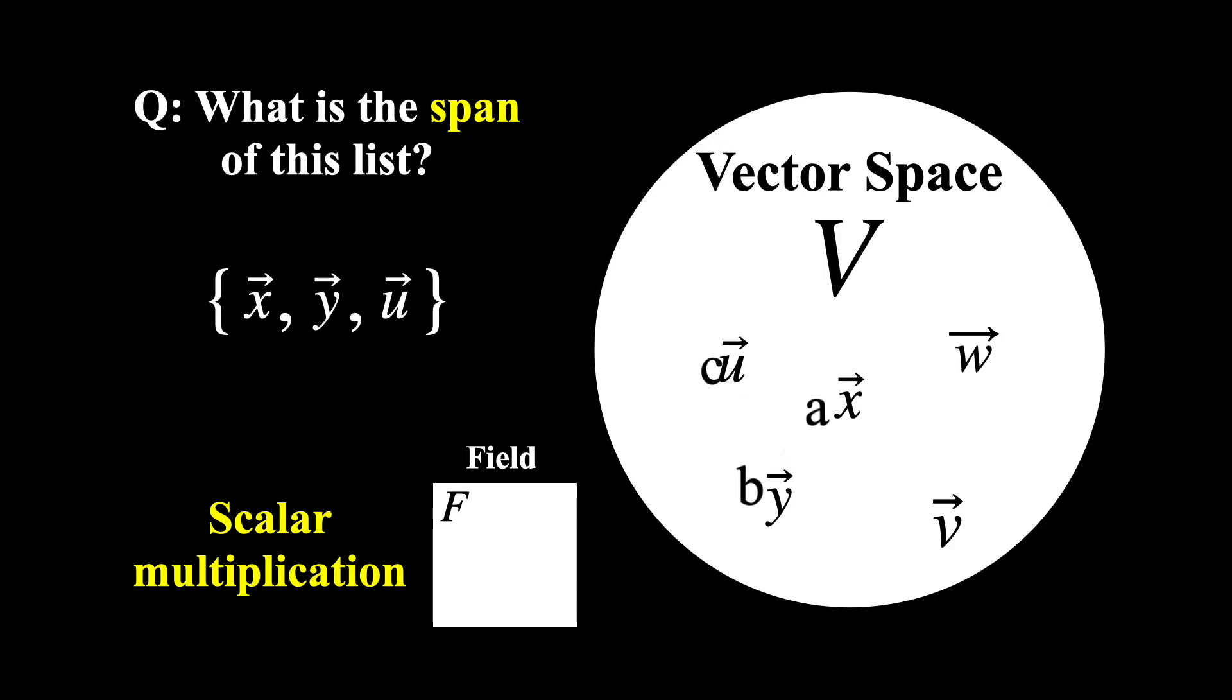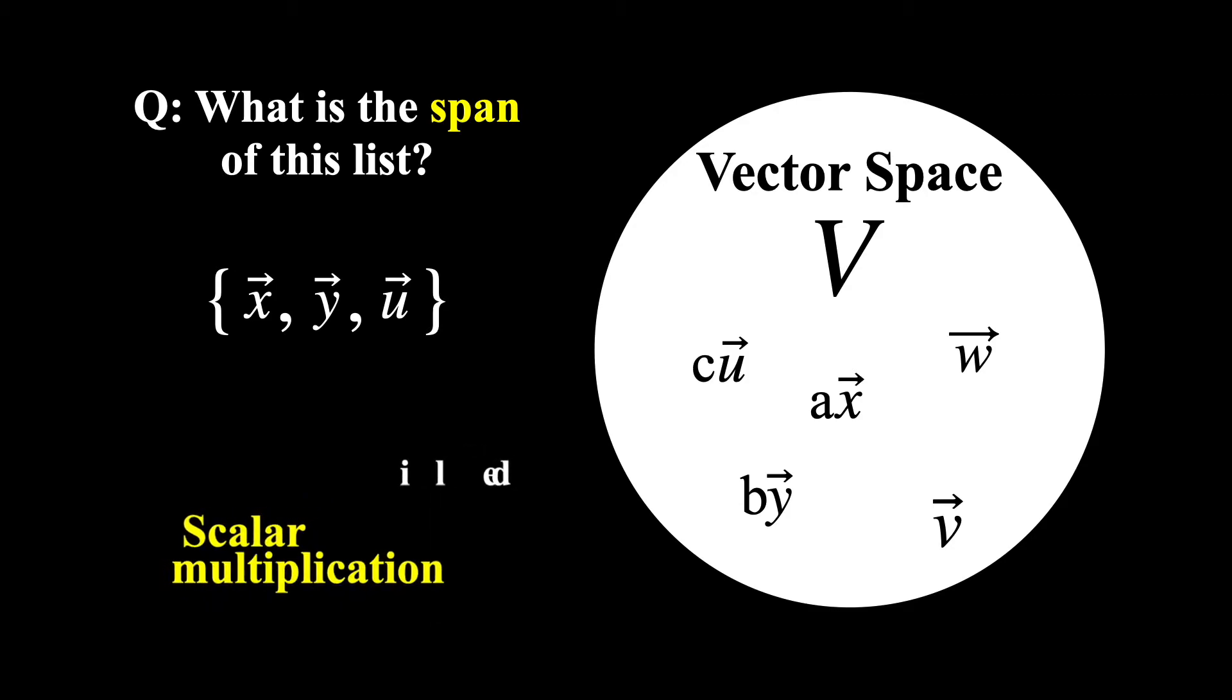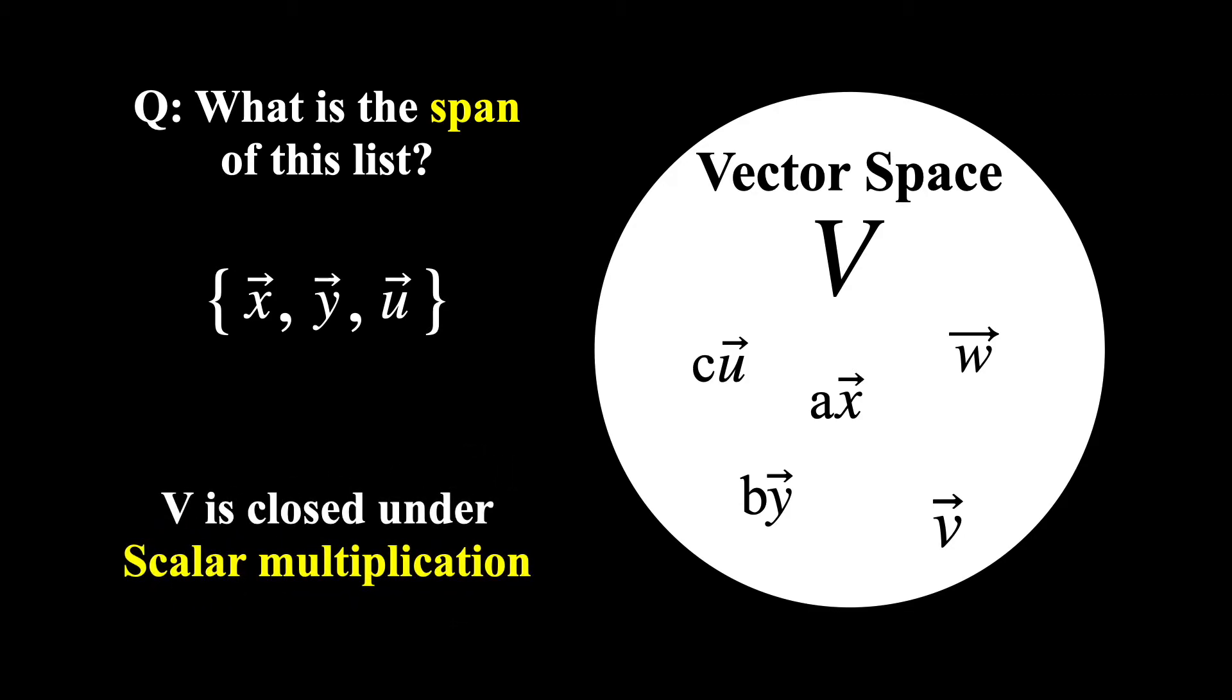Now since a vector space is closed under scalar multiplication, then anytime we do this we simply end up with another vector that lives in the vector space.